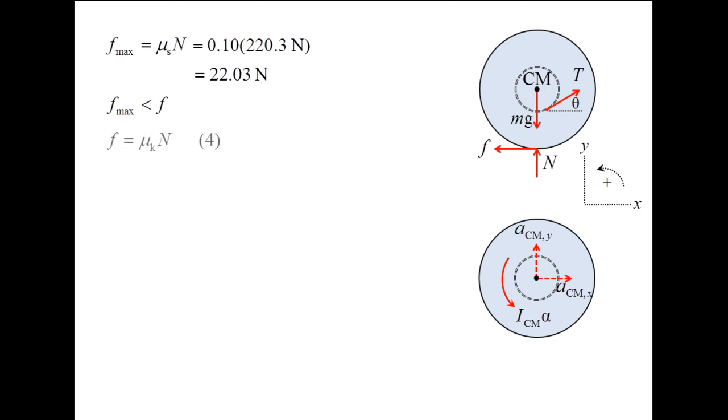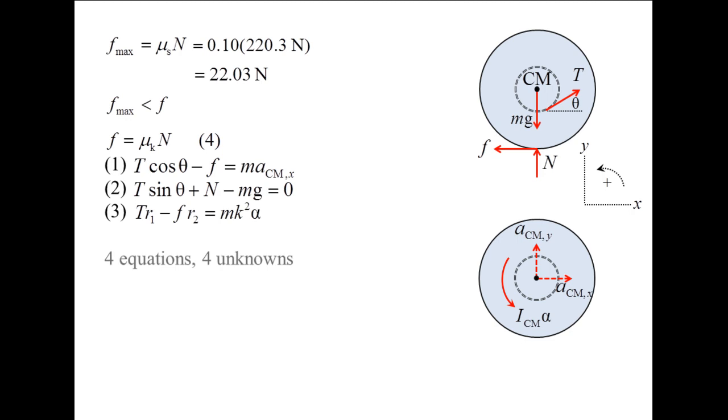This means the correct expression for the friction force is the coefficient of kinetic friction times the normal force. This is equation number four. Together with the three equations of motion, we now have four equations and four unknowns.